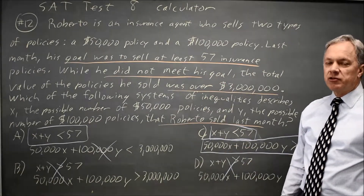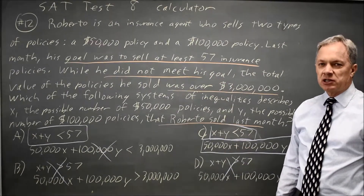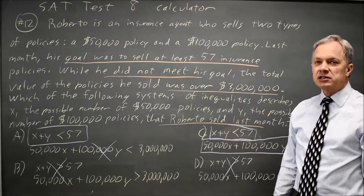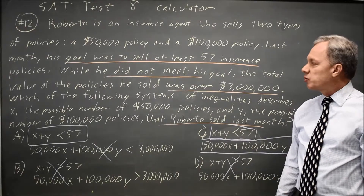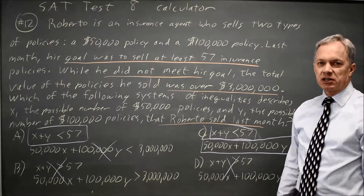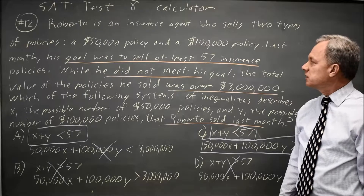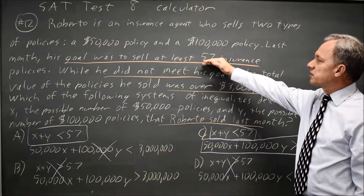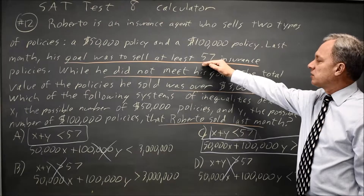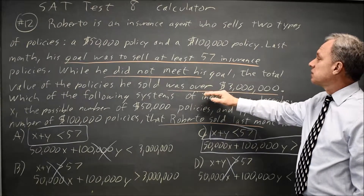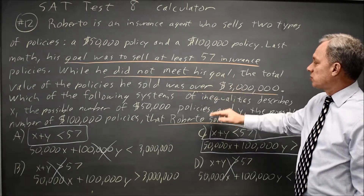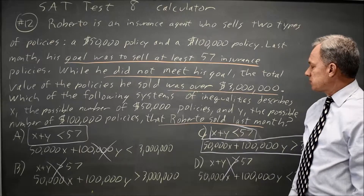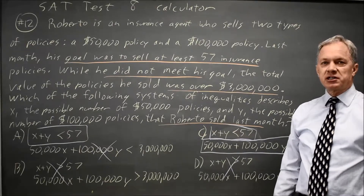It's well worth your time to reread the problem to make sure you're answering the question they're asking, because the whole point of this question is to get the direction of the inequalities right. There's a distractor: his goal was 57, but they later say he did not meet his goal and we want a system for what he actually sold. So choice C is the correct answer.